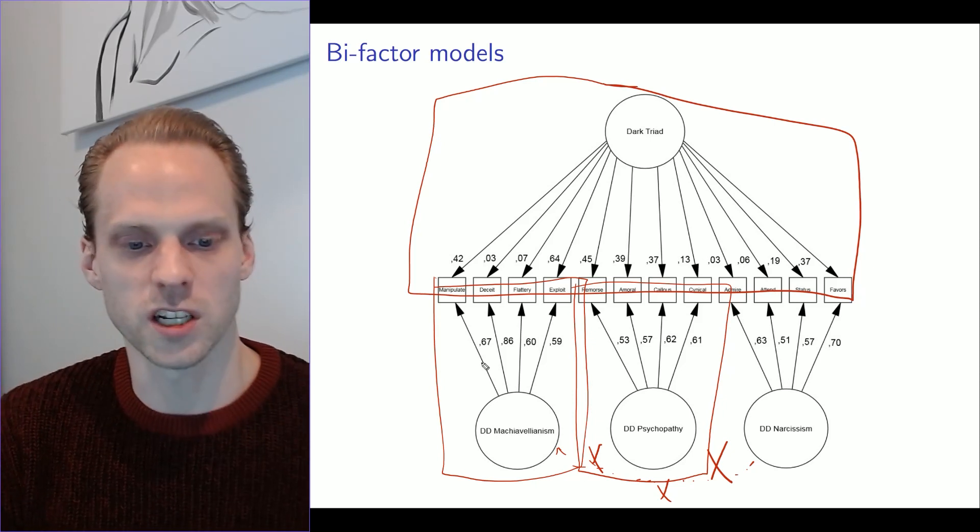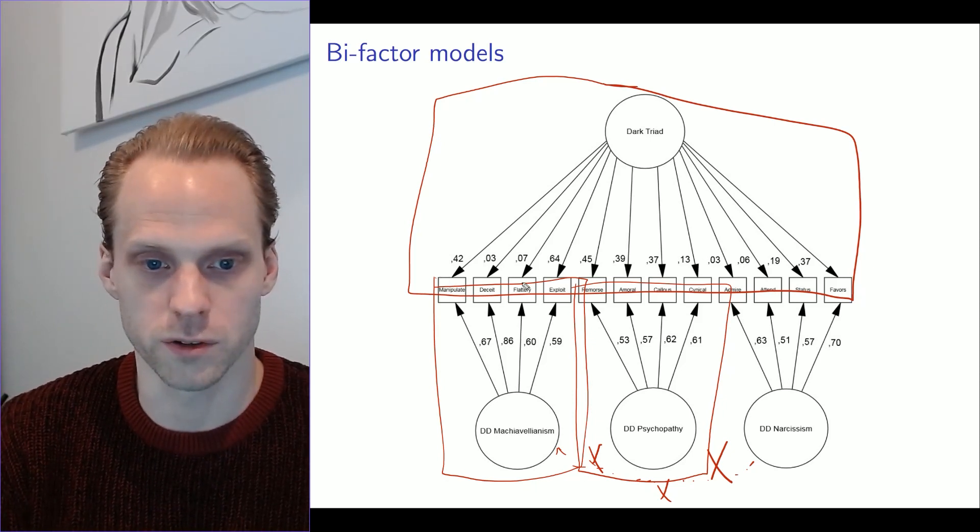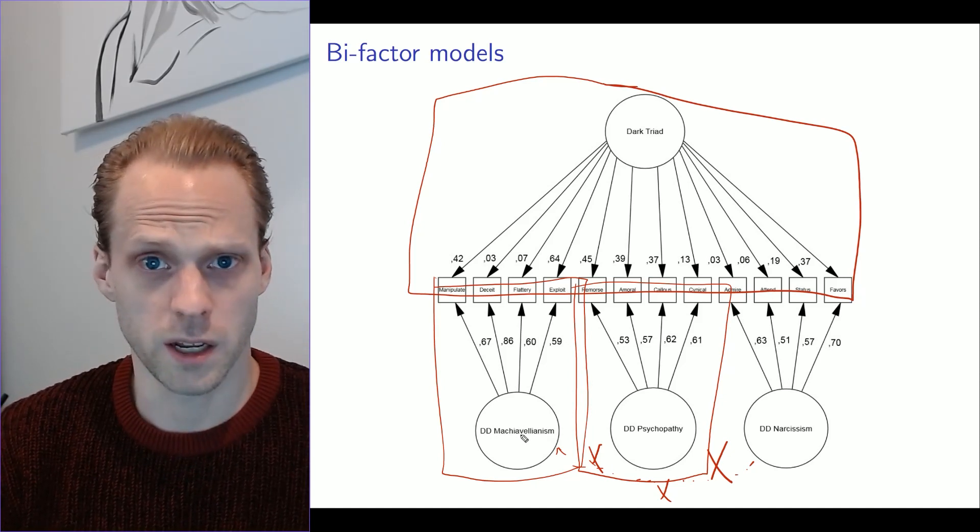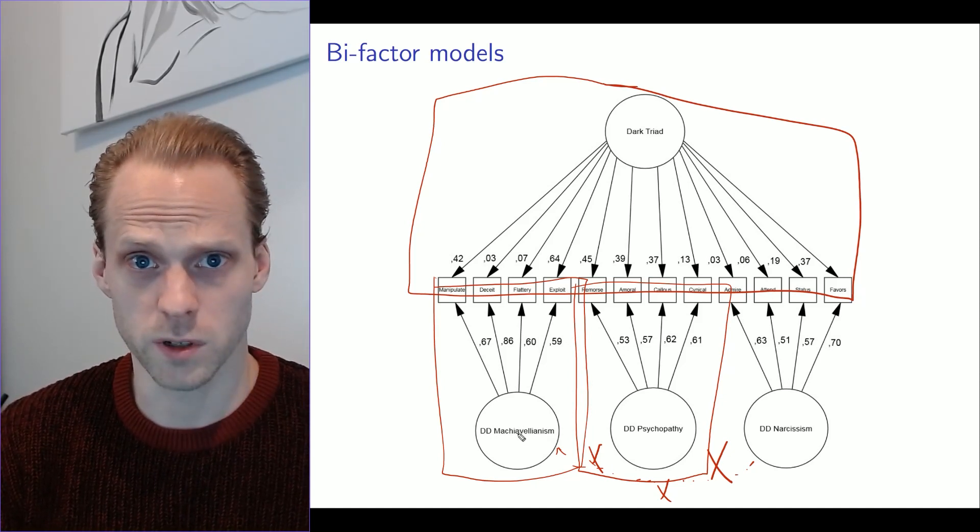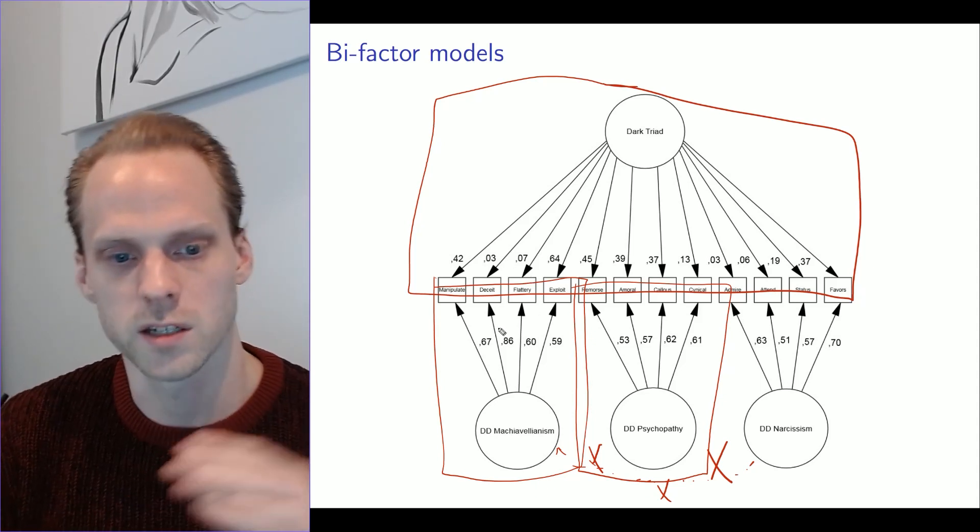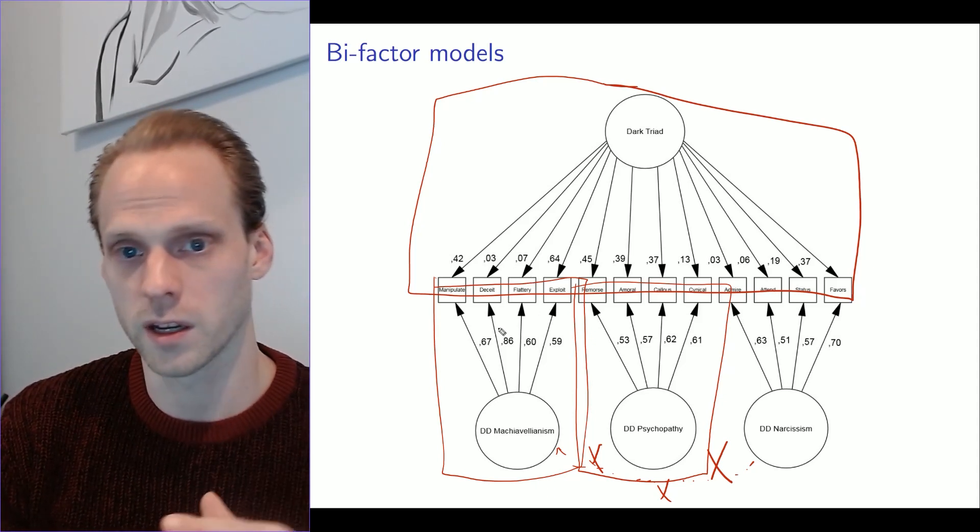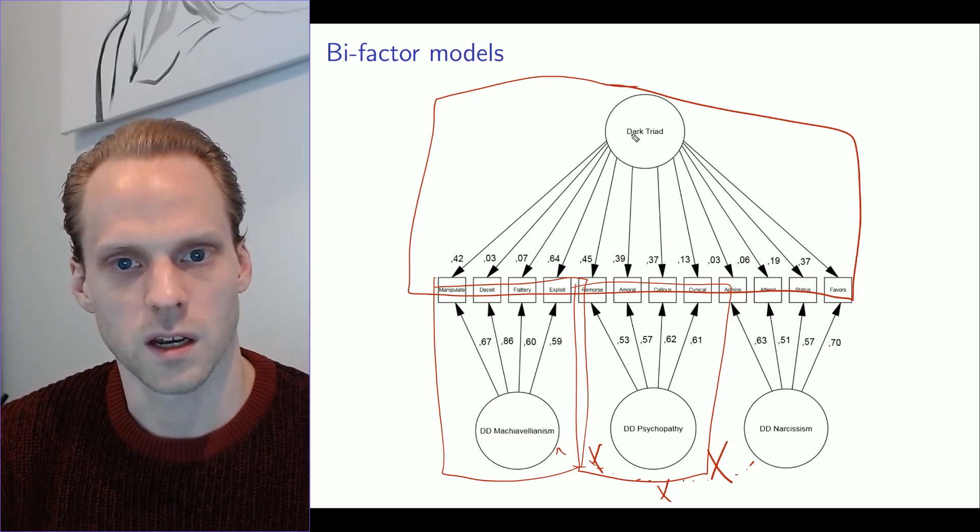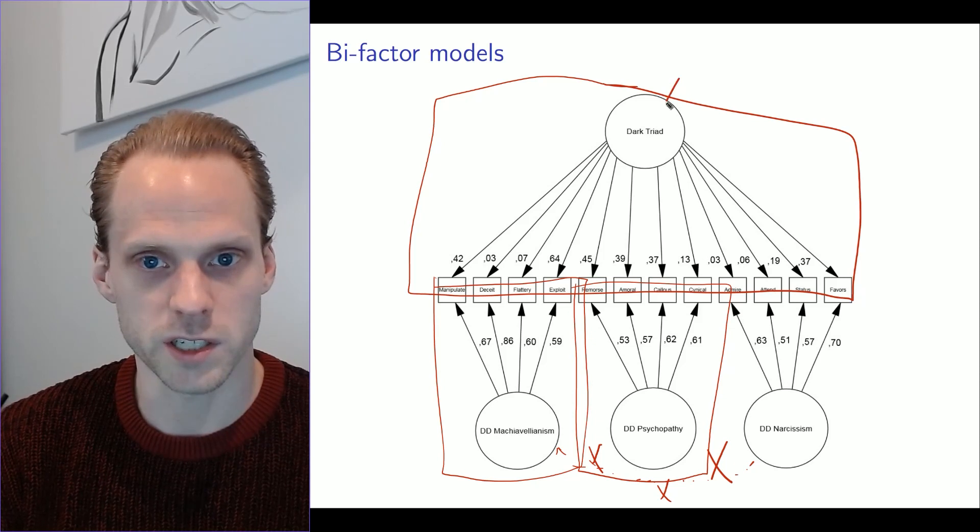So what this tells me is that we have three scales, one, two, three, four, four items in each. And there is a common variance between them. So everything is correlated with everything. But in each scale, items are more strongly correlated than they are between scales. Then with this model, I can model that. So this is the common variance that's across all scales.